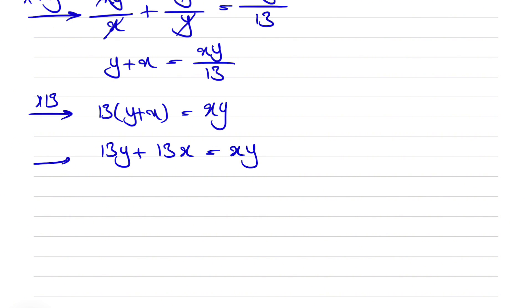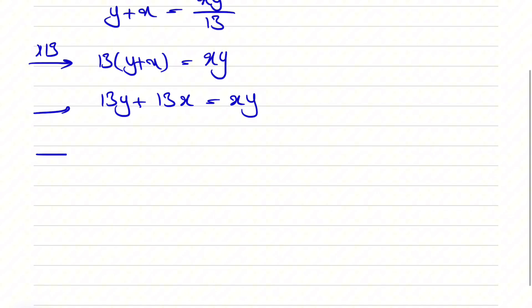And here we're going to bring everything on the right side, so all the signs will switch. So we have xy minus 13x minus 13y is equal to zero. So if you bring each of these two on the right side, we have to switch the sign from positive to negative, which is what we have here.